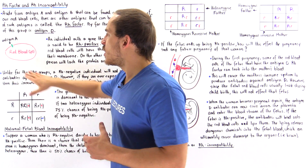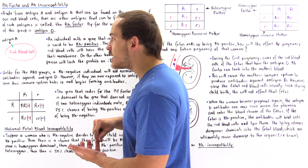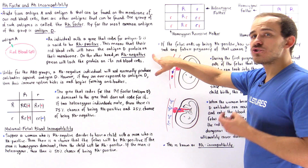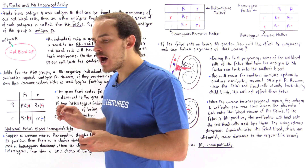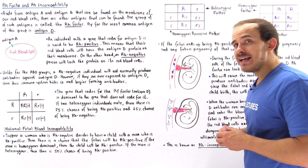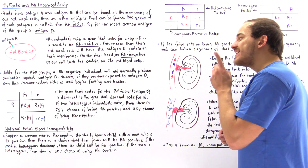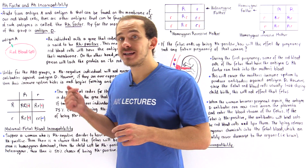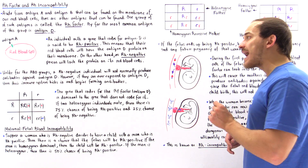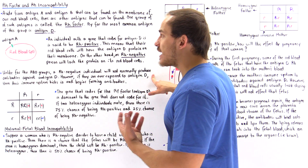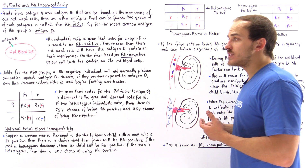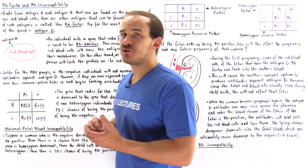In this particular diagram, we're describing a person that is blood type A and Rh negative. Unlike the ABO blood group, an Rh negative individual will not normally produce the antibody against antigen D. However, if they are actually ever exposed to that antigen D, only then will their immune system begin producing the antibody against antigen D.